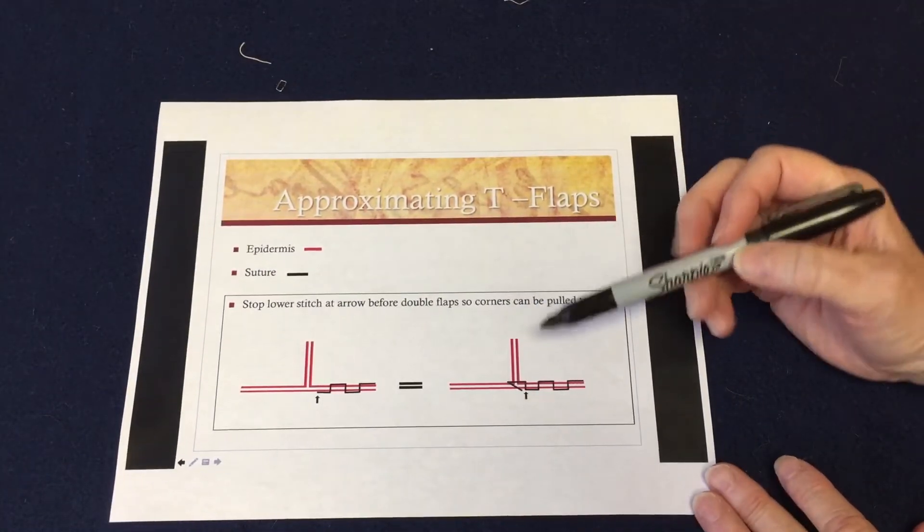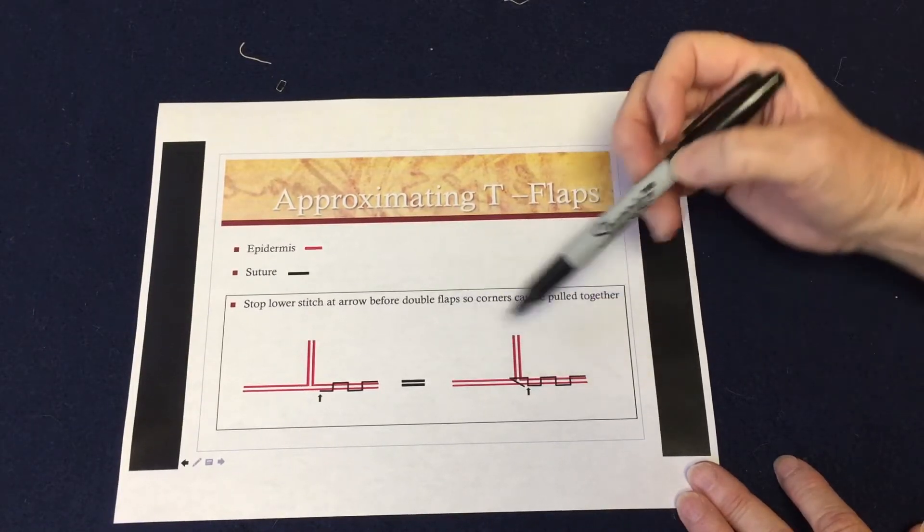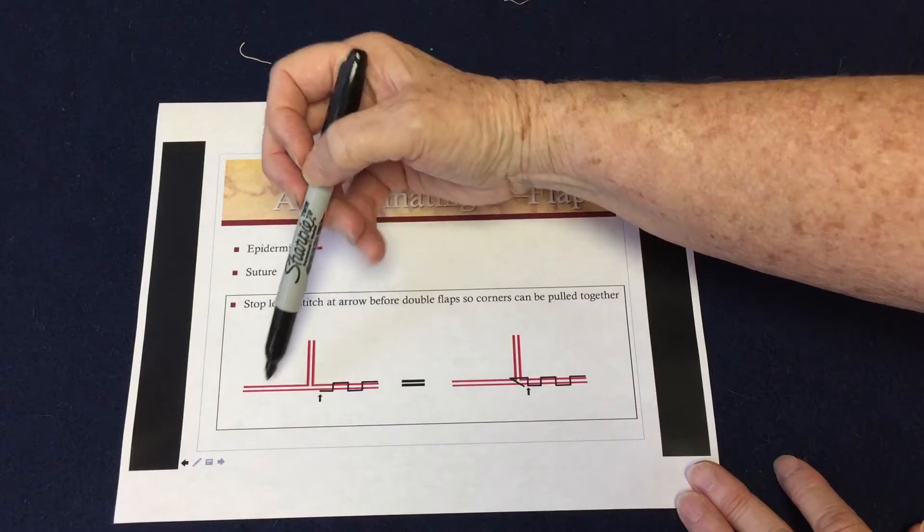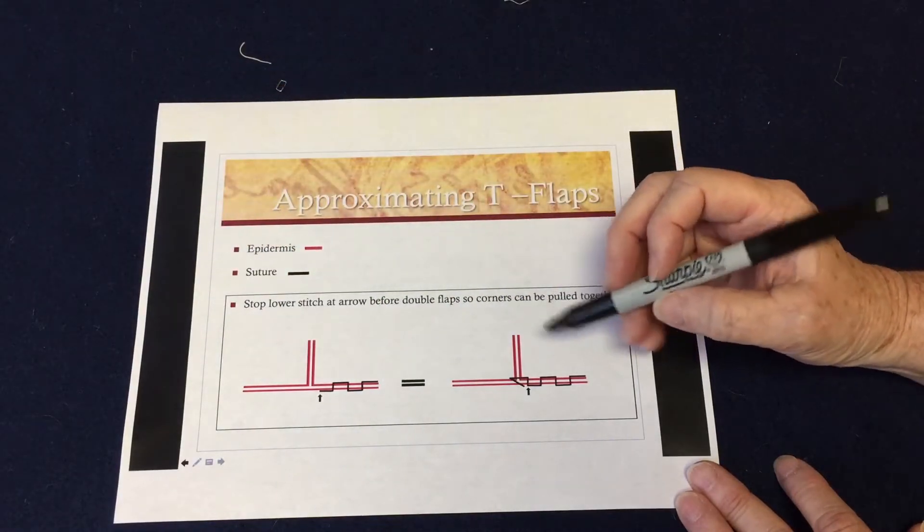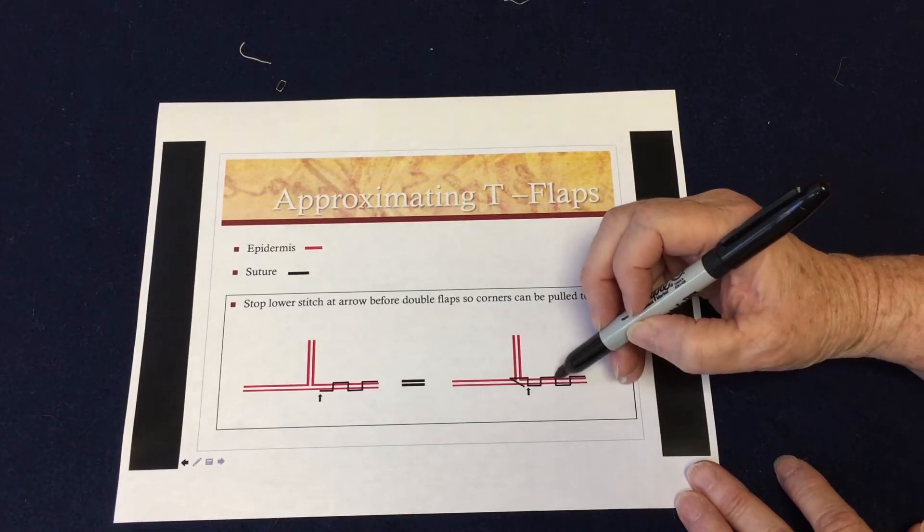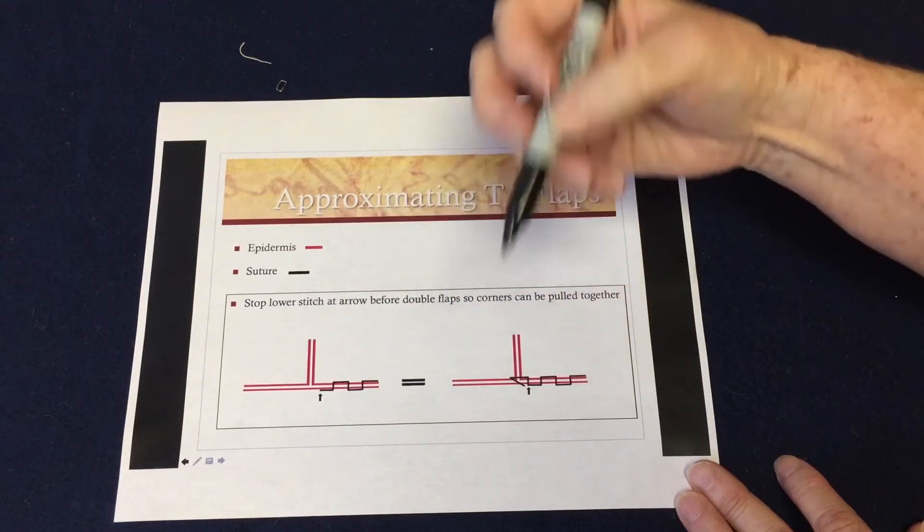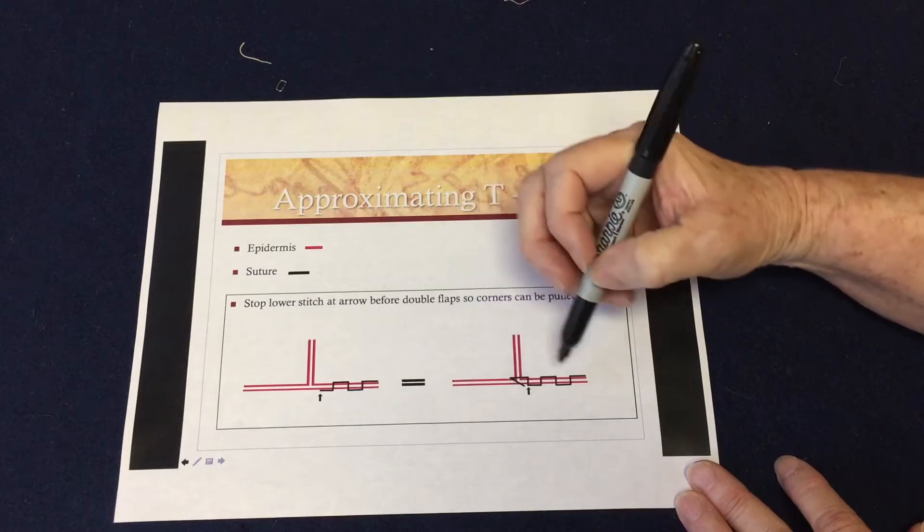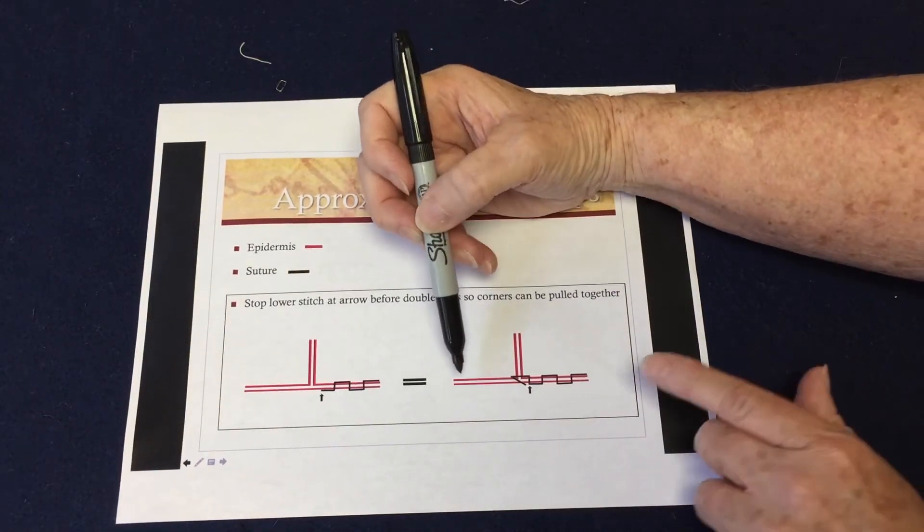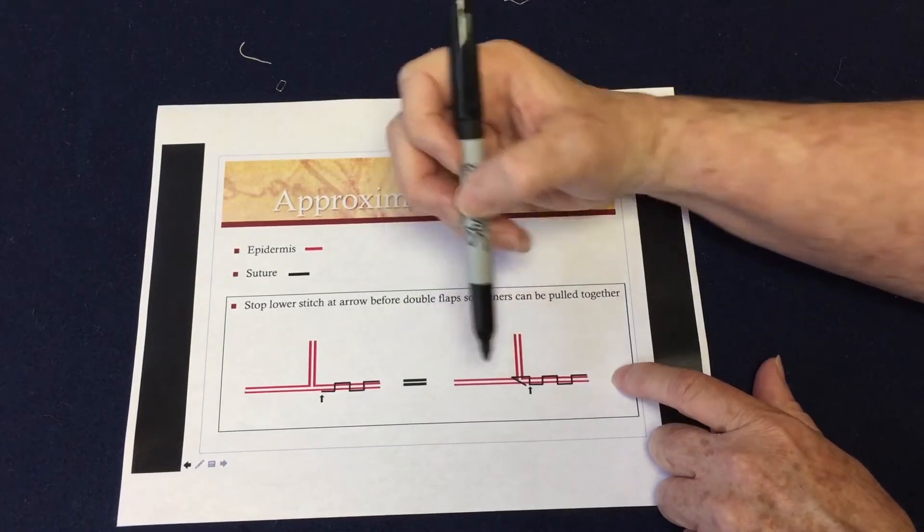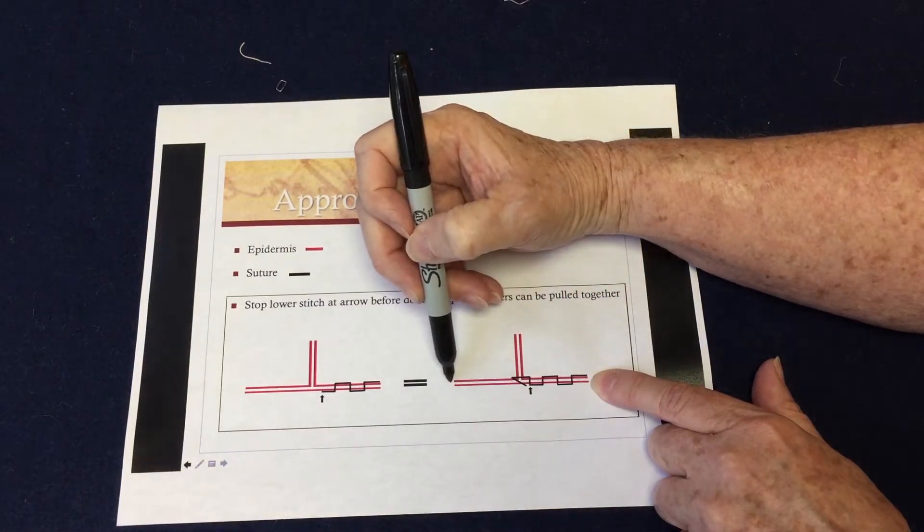If you have a T-flap, like on a breast or a radical neck, anywhere where you have a double flap on one side that you're trying to approximate with one incision on the other side, it's really important that as you're doing that stitch and going along, you stop. For purposes of the way it's drawn, we'll go this way. So if you're suturing along here, first of all, I want you to understand that I am not tying off the stitch in the middle. I am starting here with my stitch and continuing it all the way through to the end.